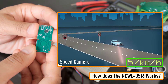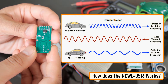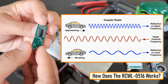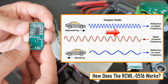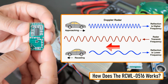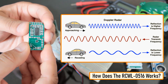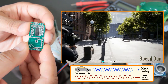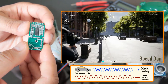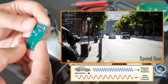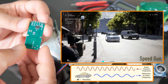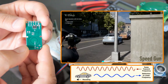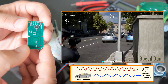Due to the Doppler effect, the frequency of the reflected microwave signal is different from the transmitted signal when the object is moving towards or away from the sensor. When a car approaches a speed trap radar, the frequency of the returned signal is greater than the frequency of the transmitted signal. And when the car moves away, the frequency is lower. This is how a speed gun calculates the speed of a car.